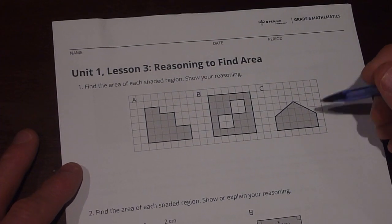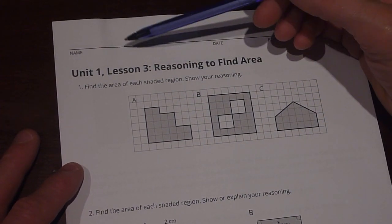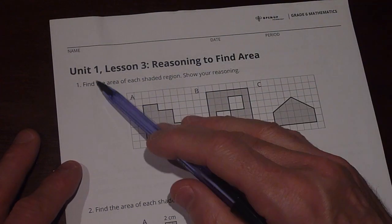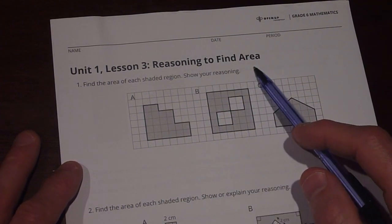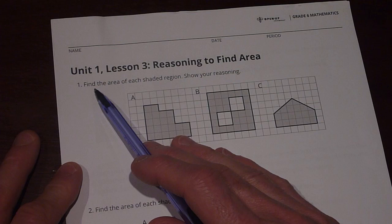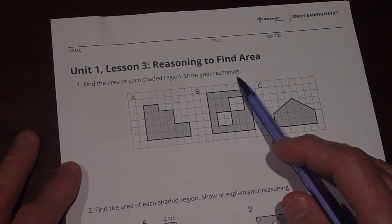Okay, hi everybody. I'm going to do the homework for the practice problems for Open Up Resources Unit 1 Lesson 3 Reasoning to Find Area. The first problem says find the area of each shaded region and show your reasoning.